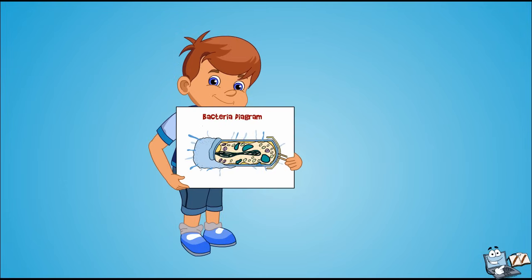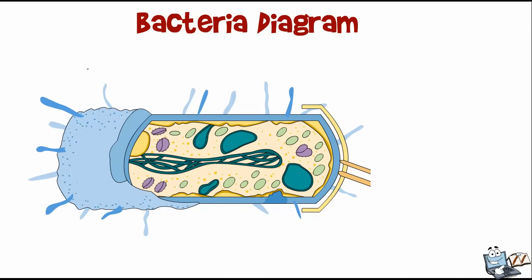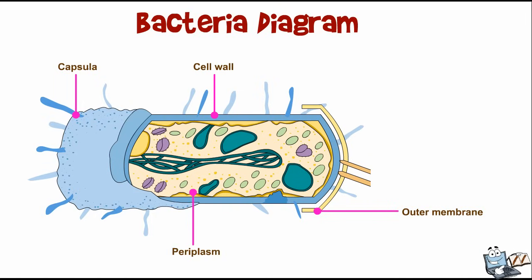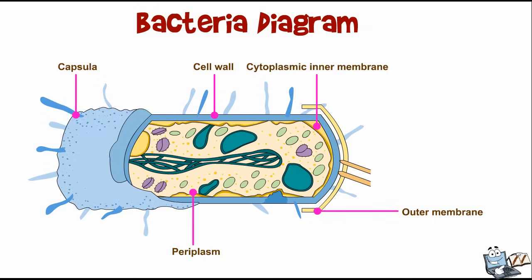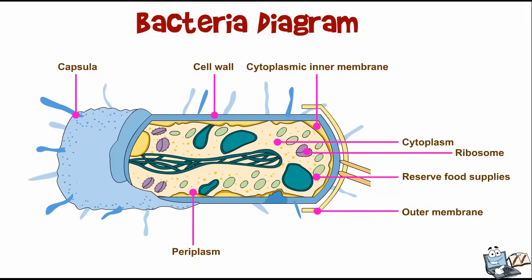Can you show the bacteria diagram to your friends? Parts of the bacteria cell: Capsula — lies outside the cell envelope of bacteria. Outer membrane — protects against harsh environment. Periplasm and cell wall — specialized region of great importance. Cytoplasmic inner membrane — contains proteins of a nuclear. Cytoplasm — gel-like matrix composed of water, enzymes, nutrients, wastes, and gases. Ribosome — serves as a site of mRNA translation and protein synthesis. Reserve food supplies — energy reserves and readily available substrates for metabolic. Chromosome — molecule of circular DNA. Mesosome — forms in bacterial cells prepared for electron microscopy by chemical fixation.